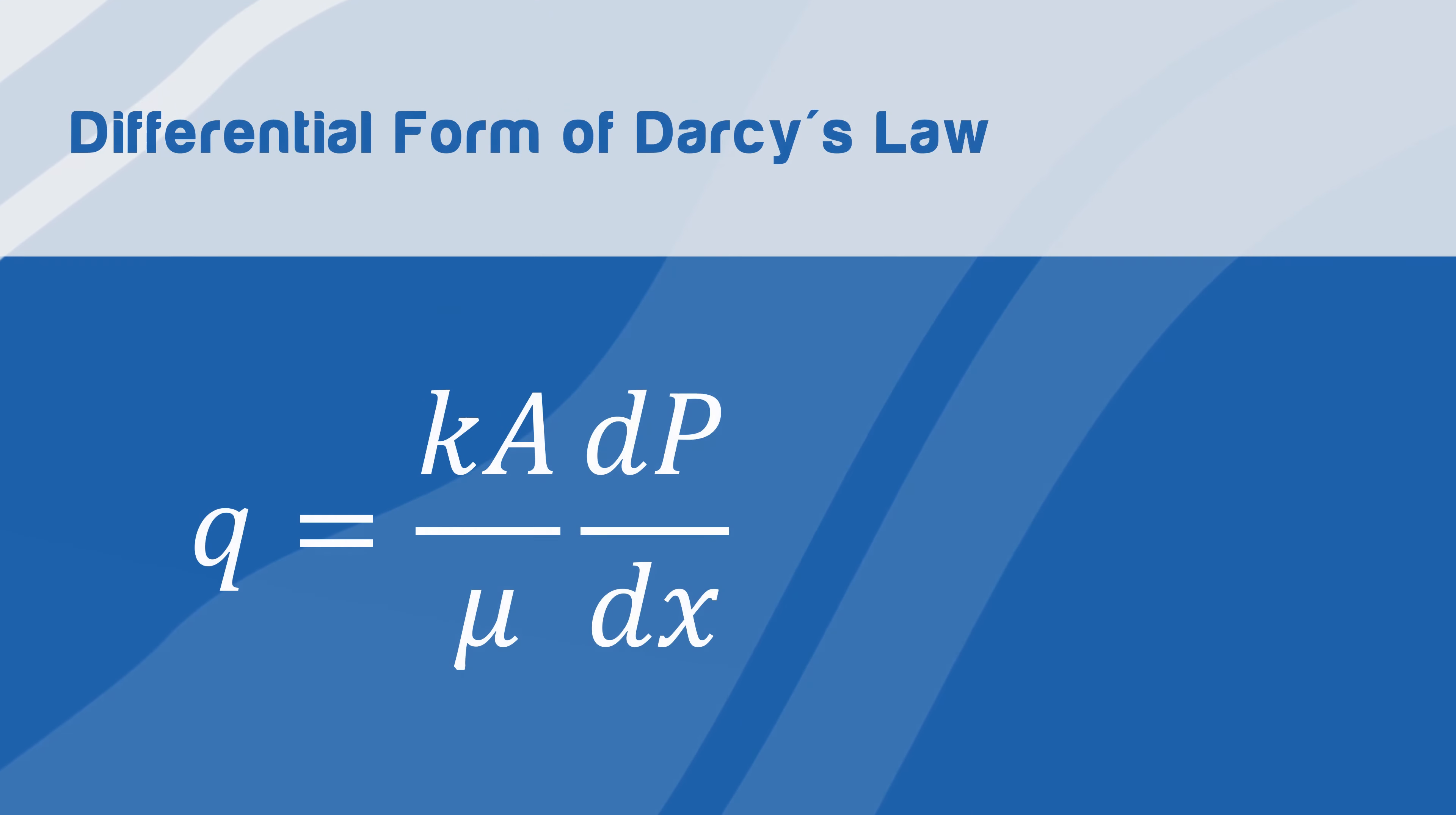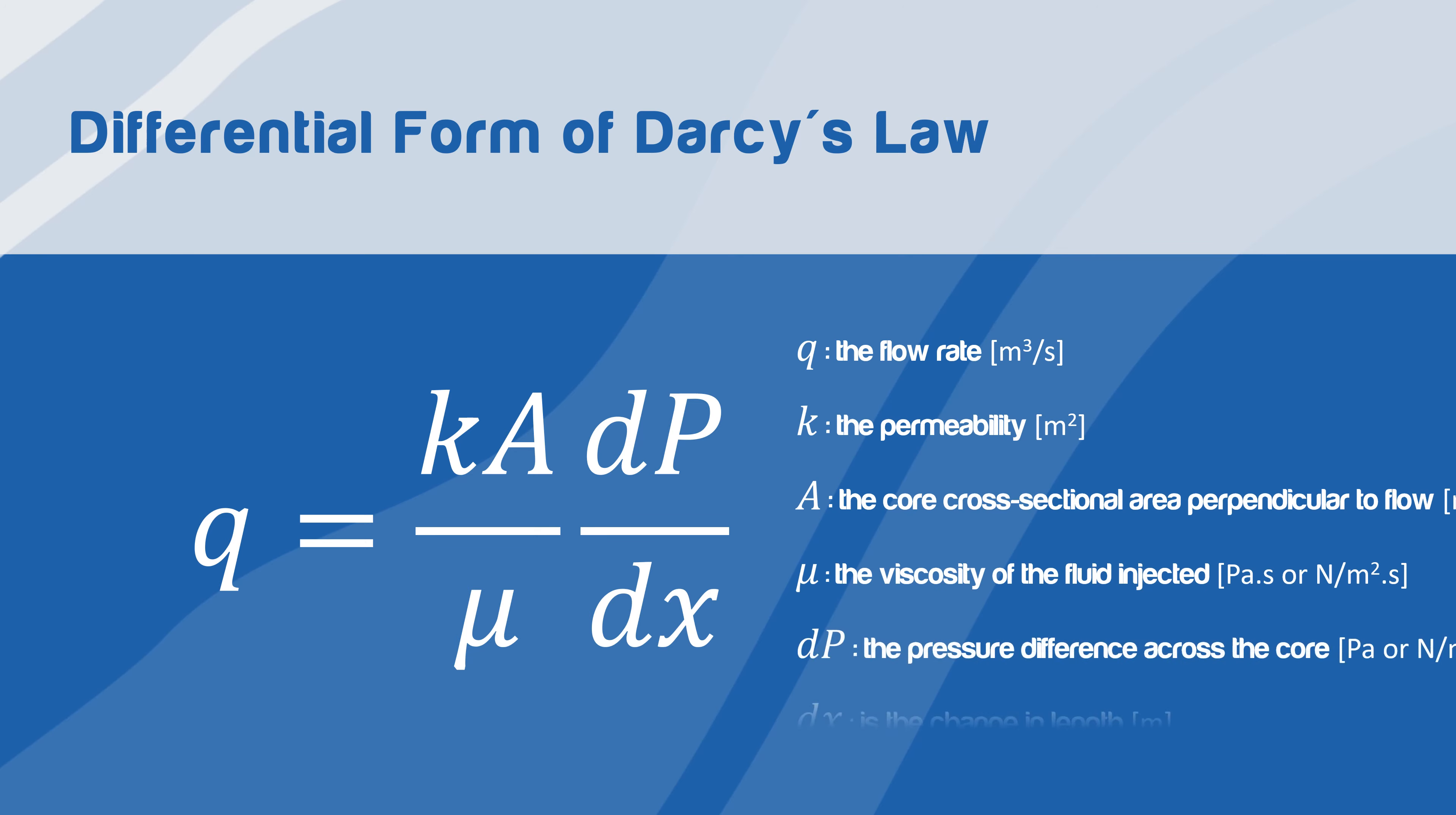The second change is that instead of the flow varying in the x coordinate, it will vary in the r coordinate, and thus, instead of having dp over dx, we will have dp over dr.